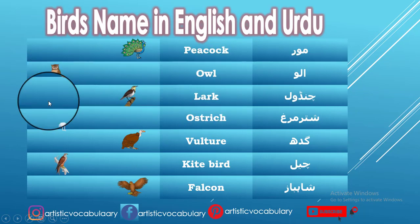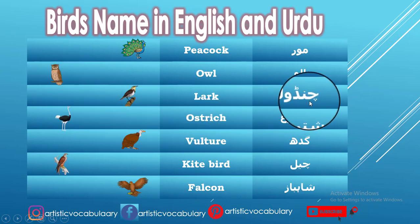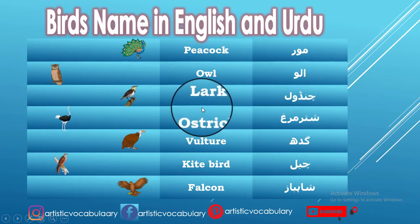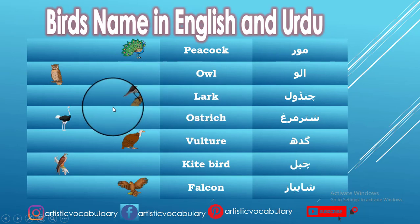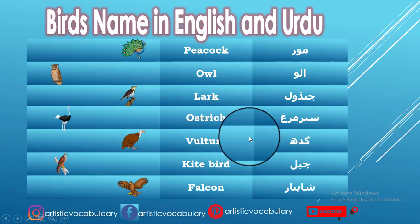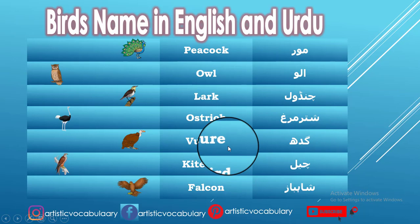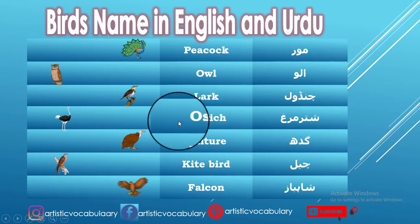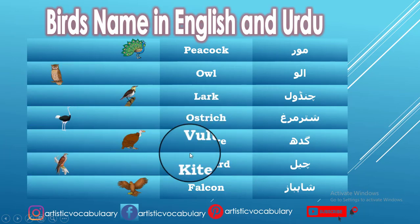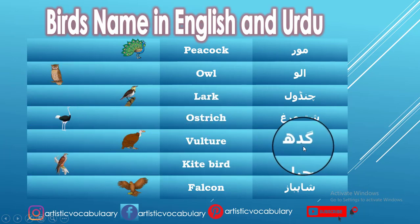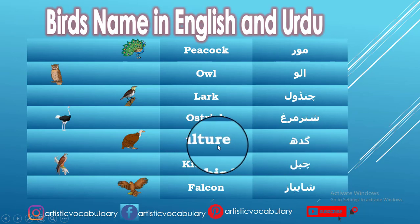Ullu — in English we call it Owl. Chandol — in English we call it Lark. Shutarmul — in English we call it Ostrich.